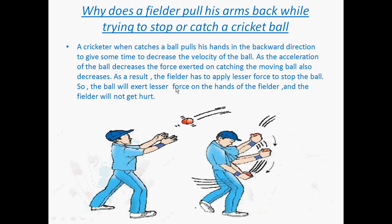Most Indians like cricket a lot. Cricketers catch the ball in a particular method. When the ball is coming at high momentum, the player catches the ball, then slowly lowers his hand downward to reduce the effect of the force acting on his hand. He is increasing the time of momentum change, and by increasing the time of momentum change, the force applied will be less.